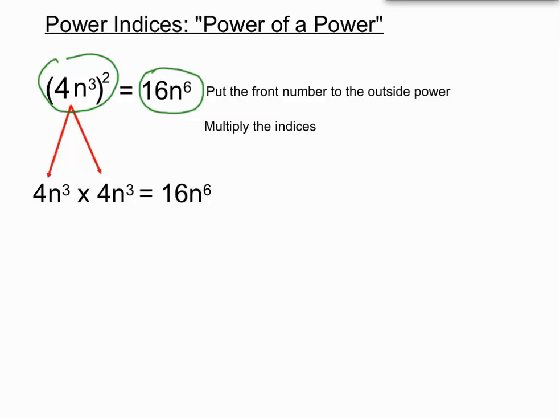But in the end we have three rules. When we are multiplying, let's just summarize. When we are multiplying terms with indices, we add the indices.